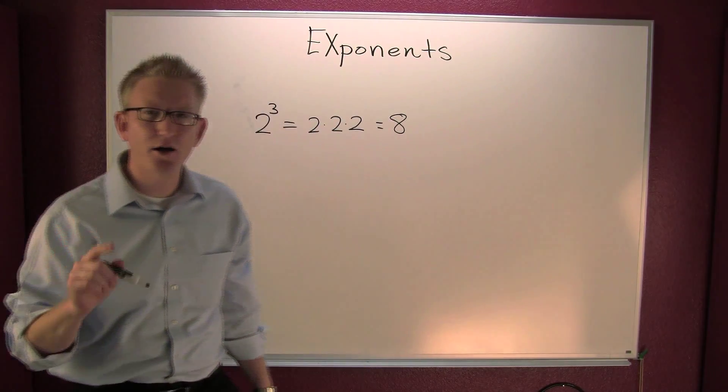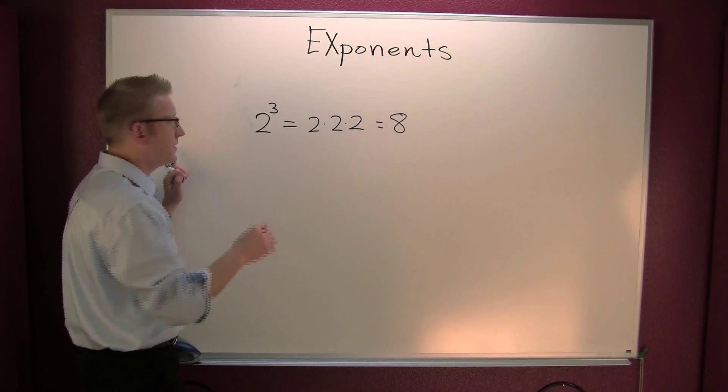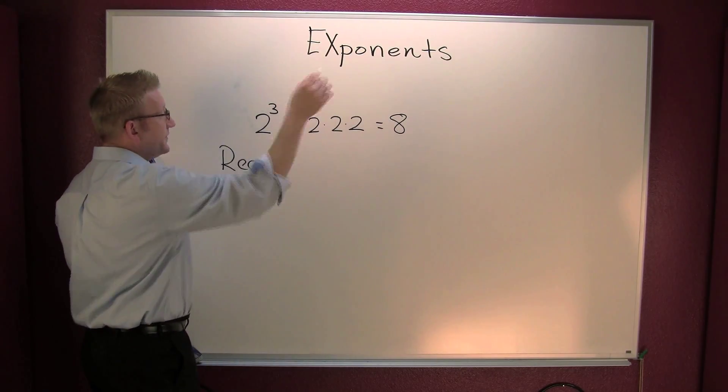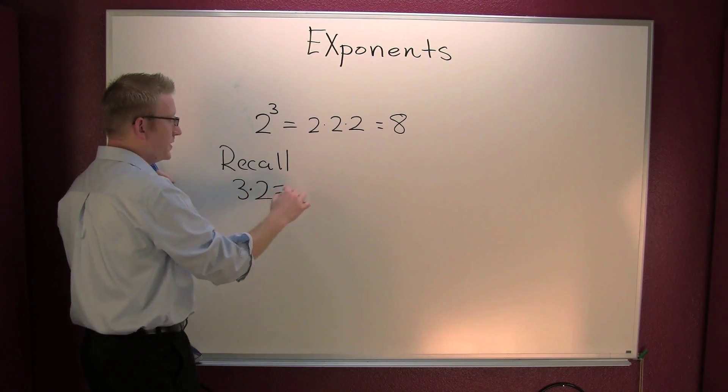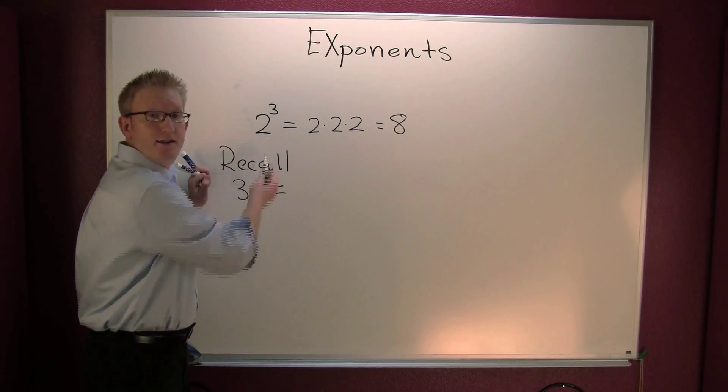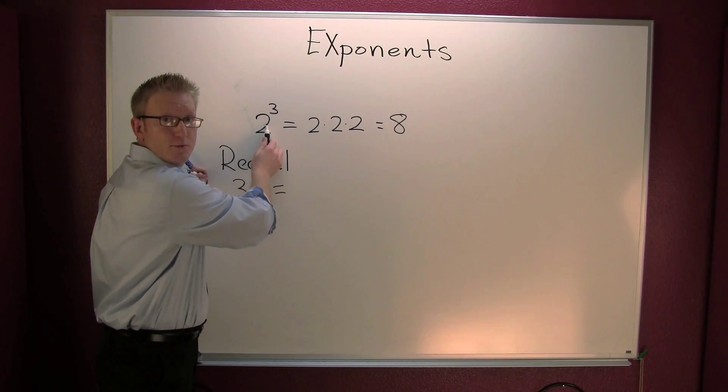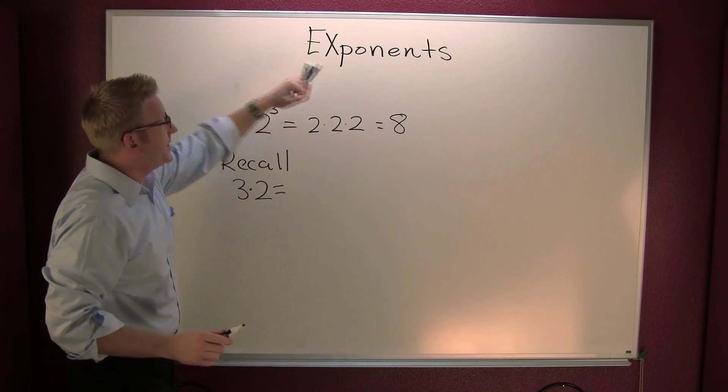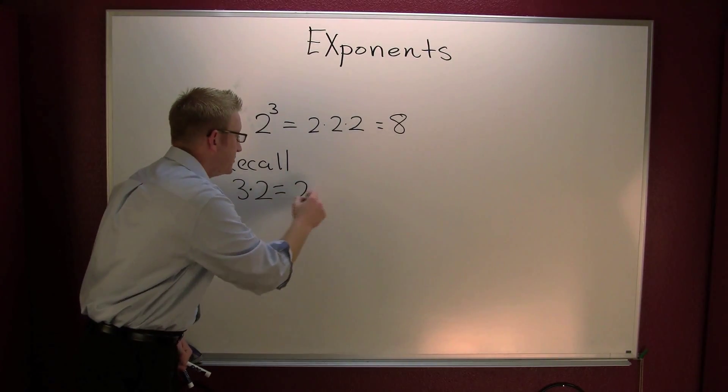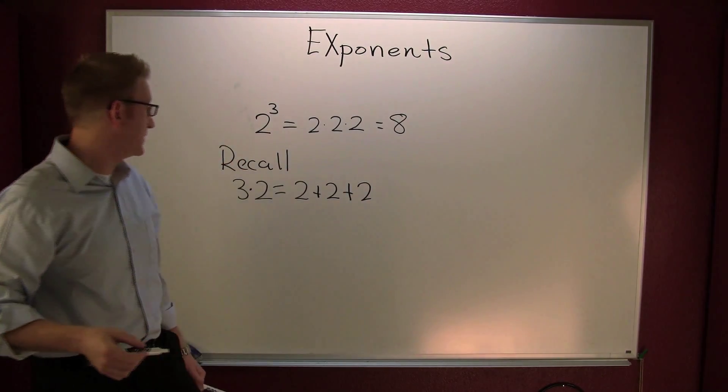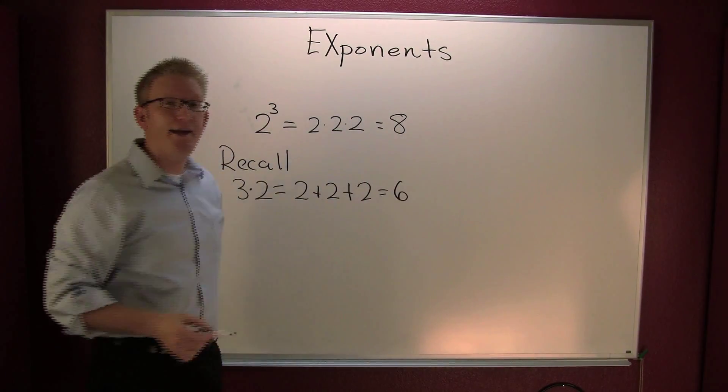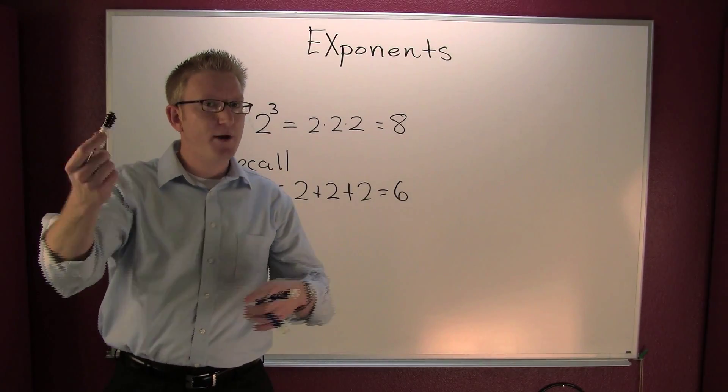Now let's review. Recall, if you had three times two, when the number's out front, that's repeated addition. This is repeated multiplication. Exponents are repeated multiplication: two times two times two. Down here, this is repeated addition: two plus two plus two. Down there you get six, up here you get eight. So you gotta pay special attention.